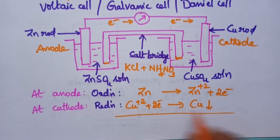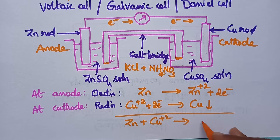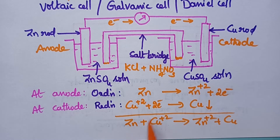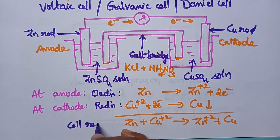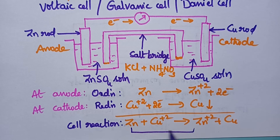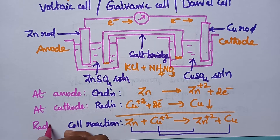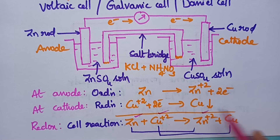What is the net result? Zn + Cu²⁺ gives rise to Zn²⁺ + Cu. This is called the cell reaction, which involves both oxidation and reduction and hence can be called a redox reaction. A redox reaction means it involves both oxidation and reduction.